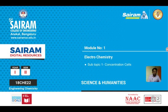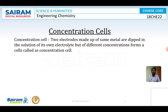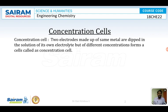Concentration cells are a type of galvanic cells where both anode and cathode are made up of the same metal and dipped in their own salt solution. If they are dipped in the same salt solution, how will current pass? Due to the difference in concentration of the electrolyte, we can observe the flow of electrons from the lower concentration electrolyte to the higher concentration electrolyte.